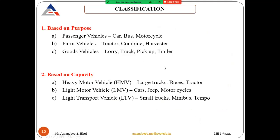The classification of automobiles: first, based on purpose — passenger vehicles such as cars, buses, and motorcycles; farm vehicles such as tractors, combines, and harvesters; and goods vehicles such as lorries, trucks, pickup trucks, and trailers. Based on capacity: heavy motor vehicles (HMV) include large trucks, buses, and tractors; light motor vehicles (LMV) include cars, jeeps, and motorcycles; and light transport vehicles (LTV) include small trucks, minibuses, and tempos.